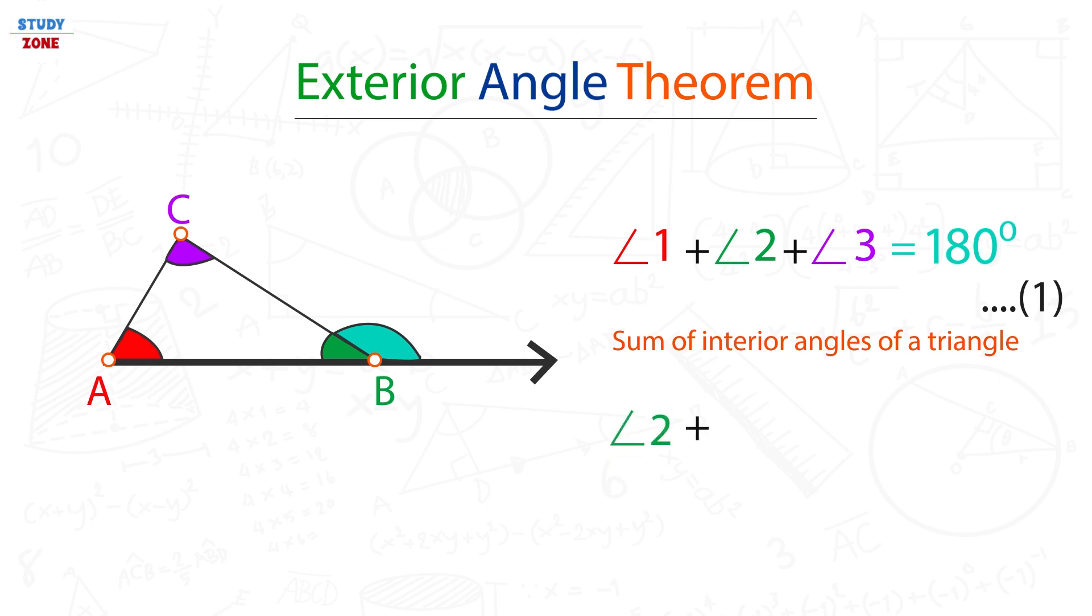Also, the sum of angle 2 and angle X is equal to 180 degrees, because these two are angles formed on a point on one side of a line, and their sum is always equal to 180 degrees.